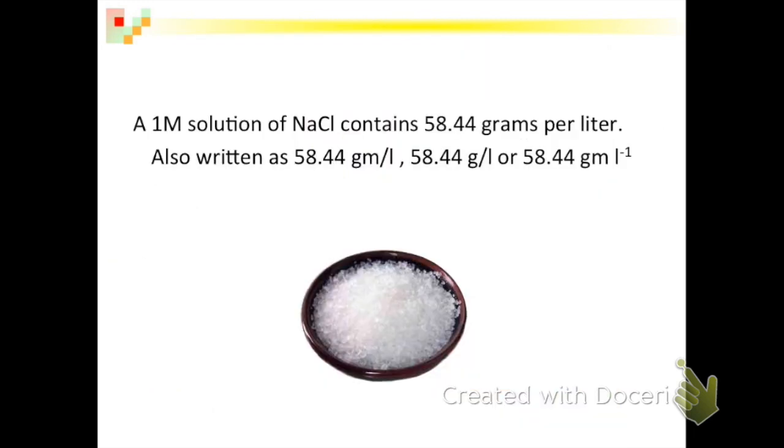Just to clarify, 58.44 grams per liter can also be written as 58.44 gm per l, 58.44 g per l, or 58.44 gm l to the negative one. Don't get confused when you see any of these ways of writing it. These all mean 58.44 grams per liter. You may also see the L for liter written in uppercase form.